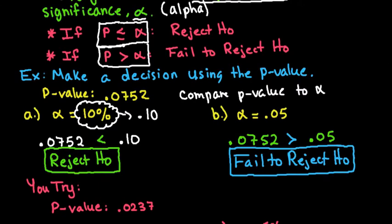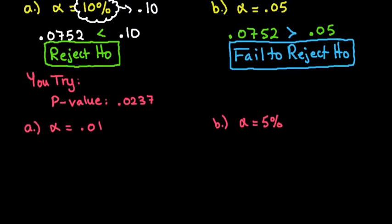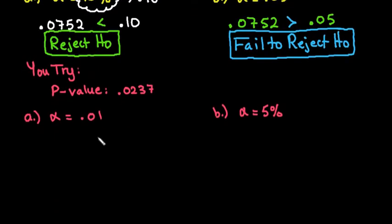What I want to do now is I want you to pause the video and try this question on your own. Go ahead and pause the video and you try. The p-value is 0.0237 and decide whether you're going to reject or fail to reject. As soon as you have come up with your conclusion go ahead and hit play to make sure that you made the correct decision.